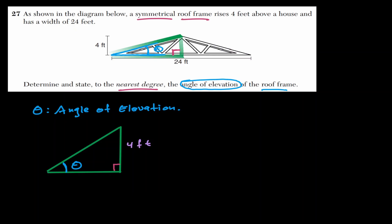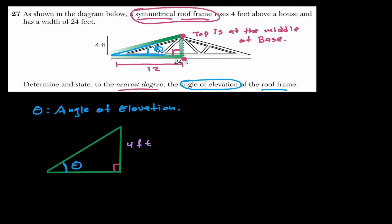Another thing to consider is that we are working with a symmetrical roof frame. That means the top of the roof frame is exactly in the middle of the base. So the base of 24 feet is cut into two equal sections of 12 feet each. The base of our right triangle is therefore 12.